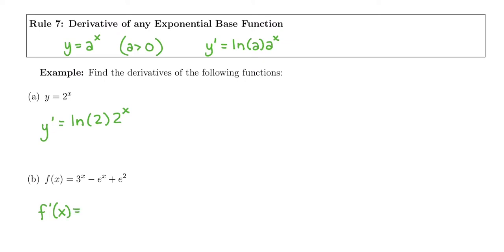We have the derivative of 3 to the x. So we have a number besides e being raised to the x. That's what tells us we have to use this rule. It's going to be ln of 3, and then we copy down 3 to the x. Minus, if we accidentally use this for e to the x, what would happen? We would have ln of e times e to the x. Well, ln of e is just 1, so it's not wrong to have that. You're just saying it's 1 times e to the x, but we know even faster. The derivative of e to the x was just e to the x.